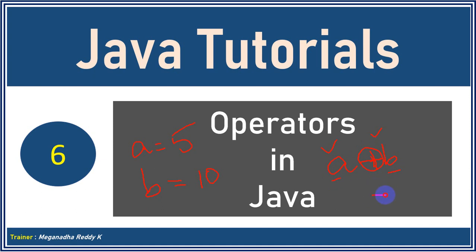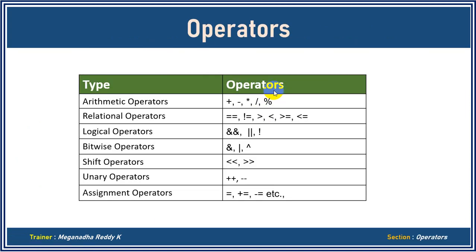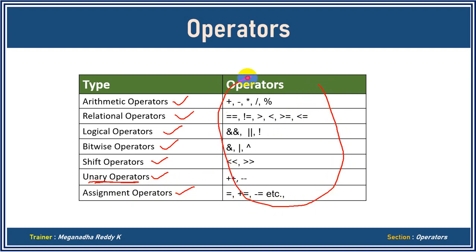You can do A plus B, A minus B, A star B, or compare them with A greater than B or A less than B. All these different types of operators in Java we are going to learn in this module. Now, in operators we have a total of seven categories: arithmetic operators, relational operators, logical operators, bitwise operators, shift operators, unary operators (also called increment or decrement operators), and assignment operators. As a programmer in Java or any programming language, you have to be very clear with all these operators. Let's discuss them one by one in detail.